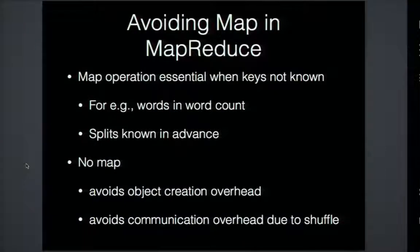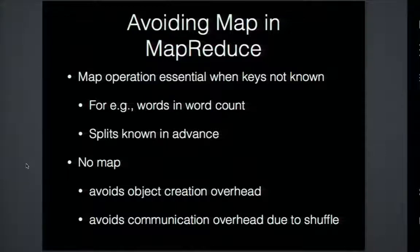A map operation in map-reduce is essential when keys are not known in advance — for example, words in word count. That's not true in our case because we already know the split candidates in advance. So if we can avoid the map, we can avoid both the object creation overhead and the communication overhead due to the shuffle.